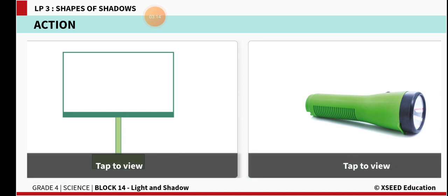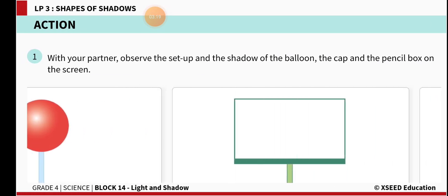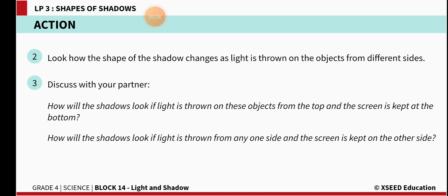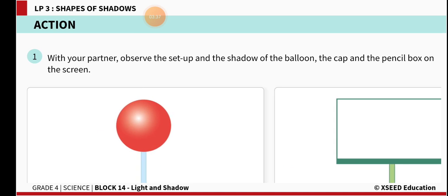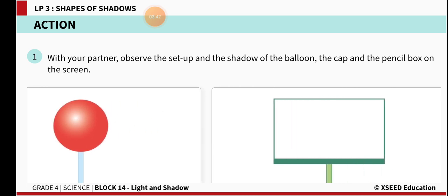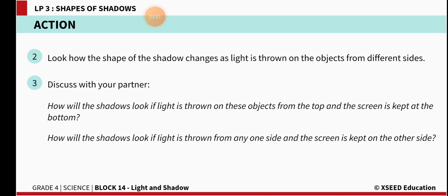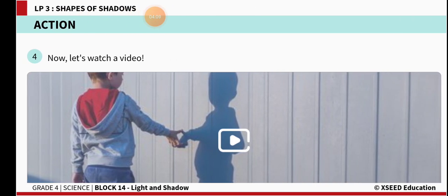Watch the video to understand how the shapes of the shadows are changing. If the light source falls on an object from the top, the shape of the shadow appears very big on the screen. If the light falls from a side, the shape of the shadow changes — it will be either long or shorter depending on the light source. You can see how the shadow looks when light is thrown from the top with the screen kept at the bottom, and from any side with the screen on the other side.